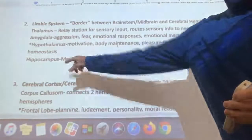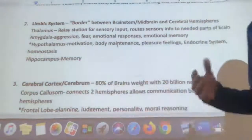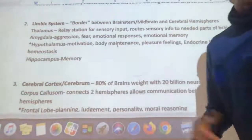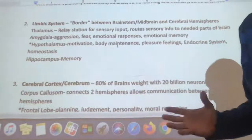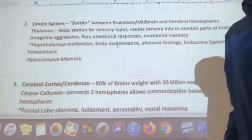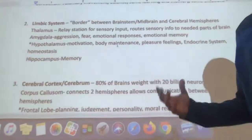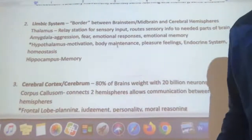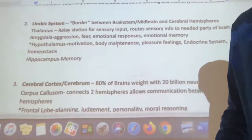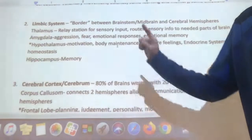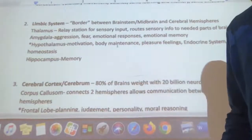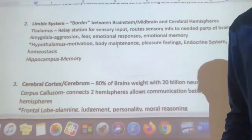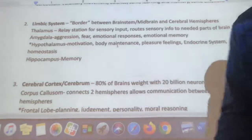Lastly in the limbic system, we have the hippocampus, which is our main memory hub. It's not the only structure that deals with memory, but it's the control center of memory — we'll talk about that in the memory unit. So to summarize: thalamus, amygdala, hypothalamus, and hippocampus are the four key structures in the limbic system.